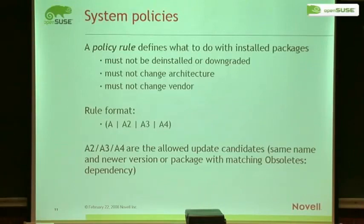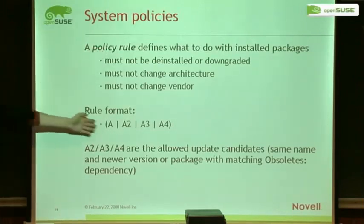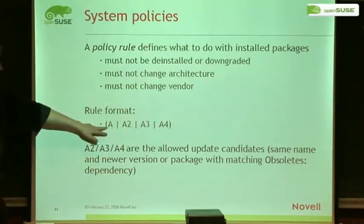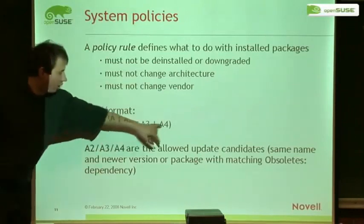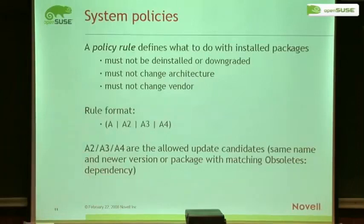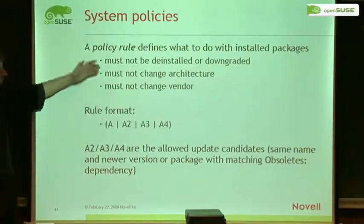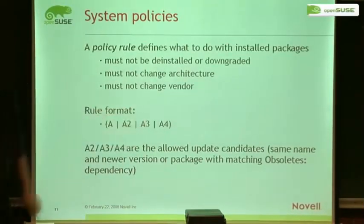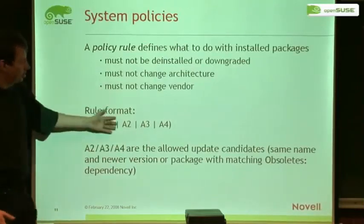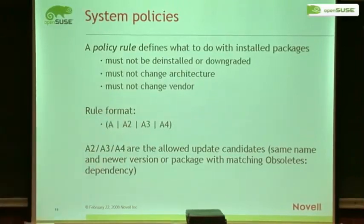Or vendor changes: if a package is from SUSE, and a repository contains a package from another vendor, the solver must not use the other package without asking the user. These policies are defined with policy rules. The rule format is like: A1 or A2 or A3 or A4 must be installed. This tells the solver it can replace installed package A with any of those — but that's it. Packages with a different architecture or different vendor are simply not in this list, so the solver knows not to install them.